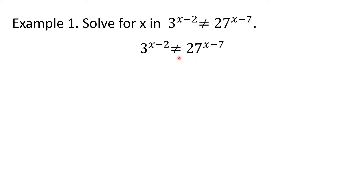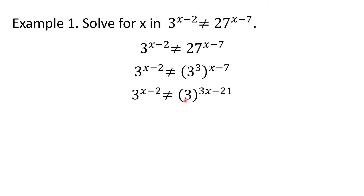In terms of 3, how will we write 27? We know that 27 is 3 cubed. So this part may be rewritten as 3 cubed. Then by the power rule for exponents, since we have 2 exponents for 3, they will be multiplied: 3 times x and 3 times negative 7. So the right-hand side will become 3 raised to the 3x minus 21 power. Notice that the inequality now has the same base on both the left and right-hand sides.